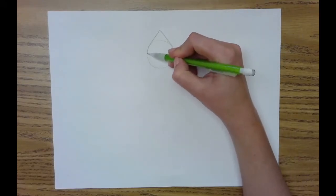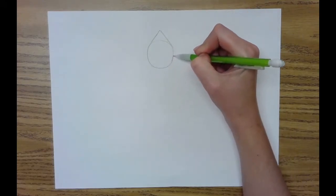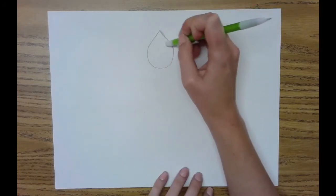Then you can go back over your teardrop a little bit harder with your pencil and erase the line in between.